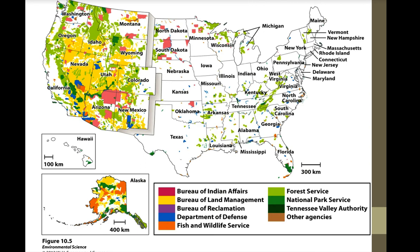A color-coded map shows where all different types of protected lands are. Pink land falls under the Bureau of Indian Affairs; yellow is the Bureau of Land Management, which manages land for mineral resource extraction; purple is the Bureau of Reclamation; blue is the Department of Defense; orange is the Fish and Wildlife Service, with quite a bit in Alaska; light green is the Forest Service; medium green is the National Park Service; dark green is the Tennessee Valley Authority in Tennessee; and brown represents various other agencies.